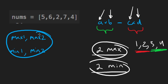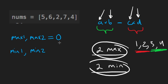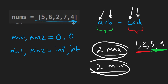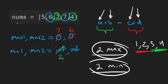Since we're trying to maximize the max variables, let's initialize them to zero. Since we're trying to minimize the min variables, let's initialize them to infinity. We're going to iterate over every element in the input array, and by the time we've gone through the entire array, we should have picked out the two largest numbers — say six and seven — assigned to max1 and max2, where seven is max1 and six is max2.